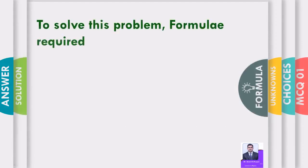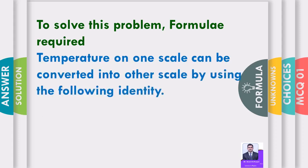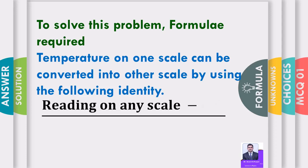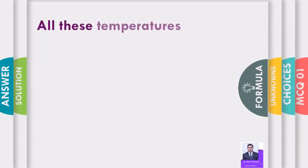To solve this problem, formula required: temperature on one scale can be converted into other scale by using the following identity. Reading on any scale minus LPF divided by UPF minus LPF is a constant for all scales.